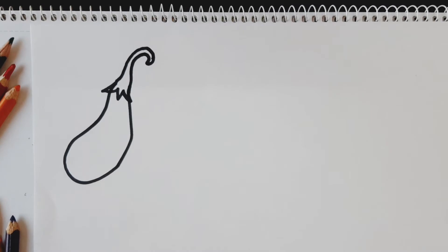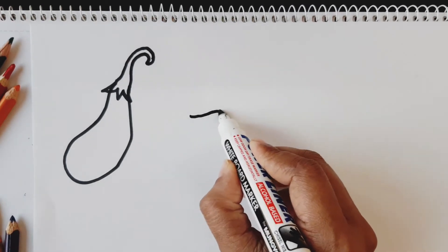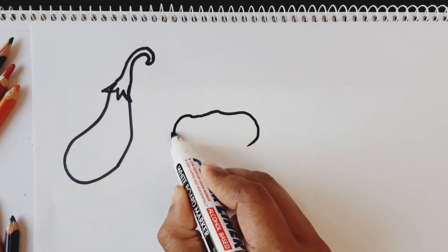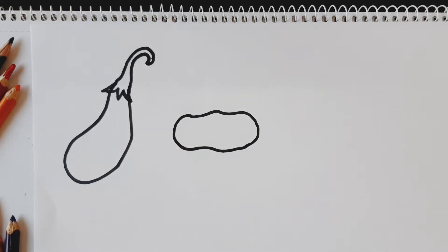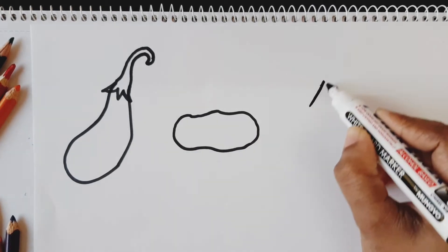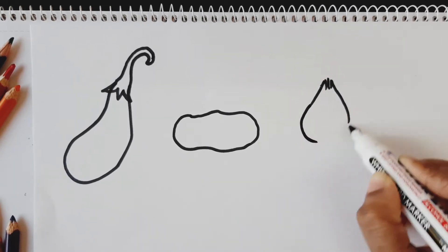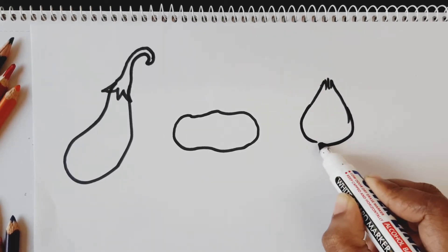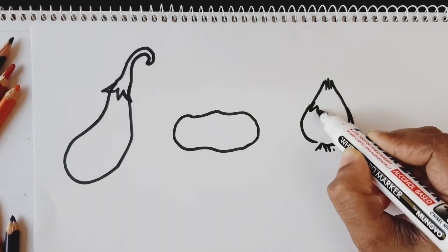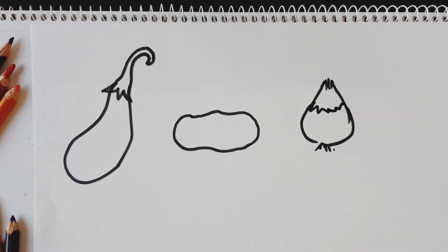Now everyone's favorite potato, okay. Now onion which makes us cry, right? Onion. Then I'm going to draw tomato.